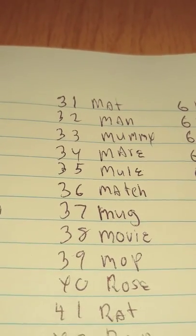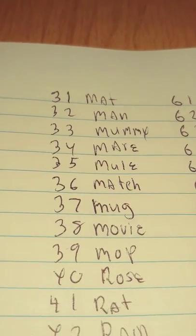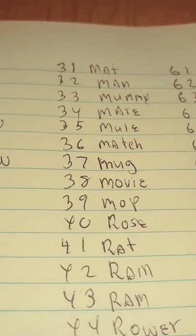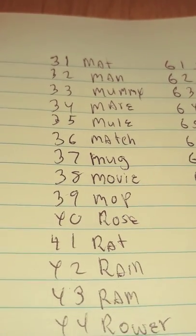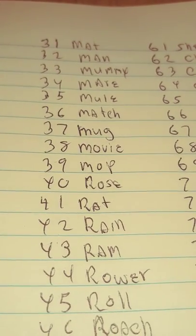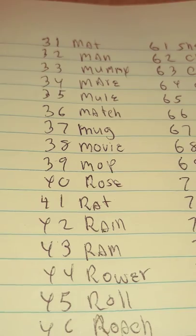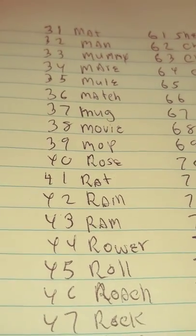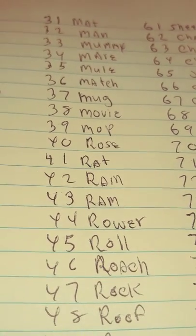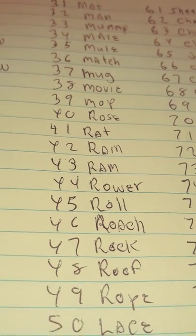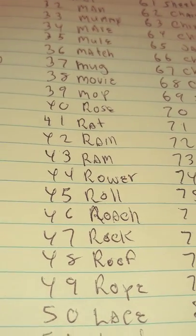38 is movie, 39 is mop, 40 is rose, 41 is rat, 42 is rain, 43 is ram, 44 is rower - W is just a placeholder of course. 45 is roll, 46 is roach, 47 is rock, 48 is roof, 49 is rope.